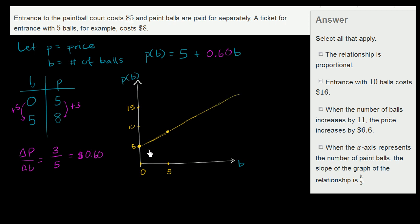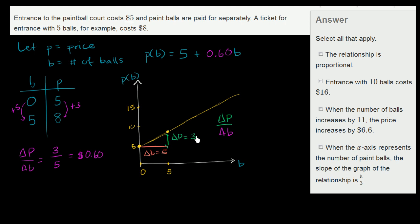If you ask what is the slope of this line — the slope is the rate of change of the vertical axis with respect to the horizontal axis. When the horizontal axis changed by 5 (change in B = 5), your change in price was equal to 3. So your change in price over your change in the number of balls — which is the definition of slope — is equal to 3 over 5, which is exactly $0.60 per ball.